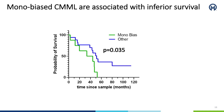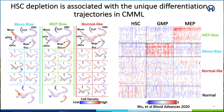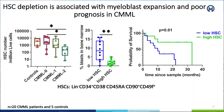Monocytic CMMLs were found to be associated with inferior survival and showed a striking HSC depletion. Flow cytometry-based investigation revealed a reduction in HSC numbers at WHO-defined stages of disease progression, which was associated with myeloblast expansion and adverse survival.